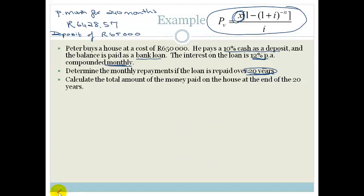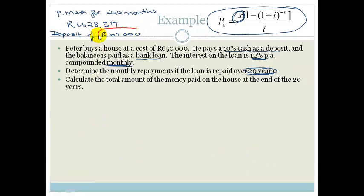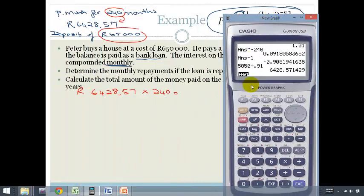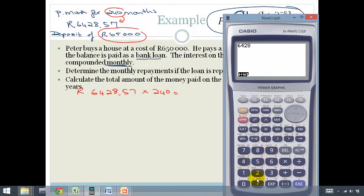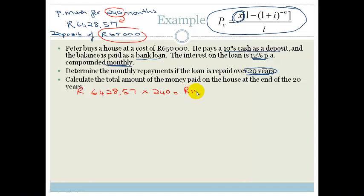Do you agree that it's actually quite easy? He paid his original 65,000, plus he paid 240 times this monthly payment. So we've got 6,428.57 times 240. It's a huge number, 1,542,856.80. But that's just his repayments on the loan. We now have to add the deposit of 65,000, so that becomes 1,607,856.80.